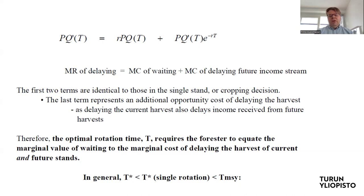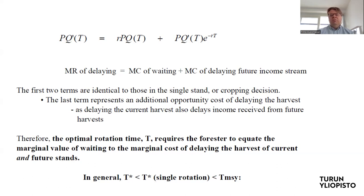Another way to think about it: suppose there is some expected price increase in the future. Suppose that price P is constant in the present period, but in the future this price is expected to grow — so it would only affect the price in the last term. In that case, the marginal cost of delaying future income streams would increase. So an expected future growth in prices would mean it is optimal to harvest earlier than otherwise.